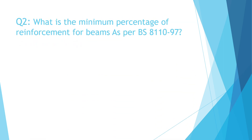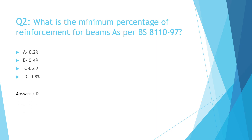Question Number 2: What is the minimum percentage of reinforcement for beams as per PSA11097? A. 0.2%, B. 0.4%, C. 0.6%, D. 0.8%. The correct answer is D. 0.8%.